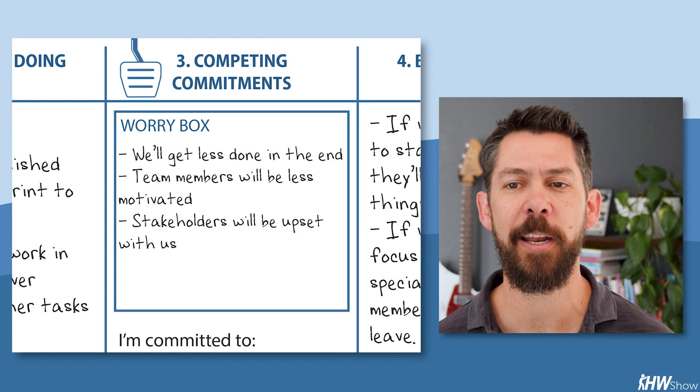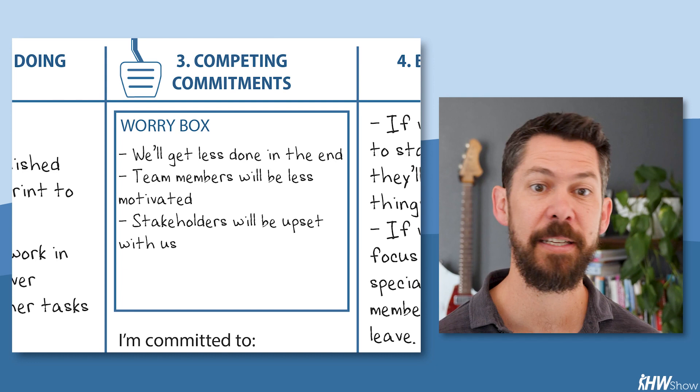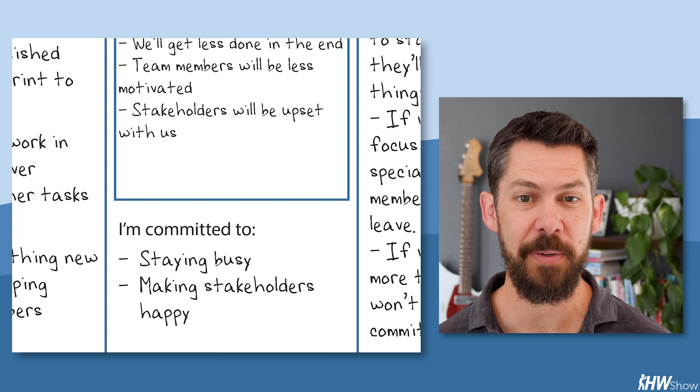Column three, what do we worry will happen if we really focus on finishing things? And what hidden commitments does that reveal? We worry that we'll get less done in the end, that team members will be less motivated, maybe because they didn't get to work on their specialty, that stakeholders will be upset with us because we say no. And this reveals that even as we say we're committed to finishing things, we also have a pretty strong commitment to starting more things.